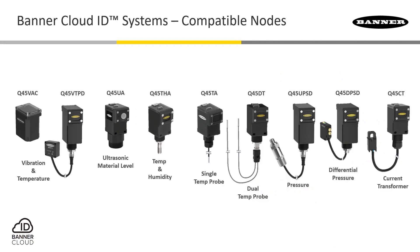Now that you've chosen the heart of the Banner Cloud ID system, it is time to determine the measurements you'd like to collect and the compatible nodes that are available to do just that. Shown here are the family of nodes for condition monitoring and preventative maintenance. These nodes measure various conditions throughout your operation and will transmit that data back to the gateway, where it is delivered to the cloud for analysis and alerts.